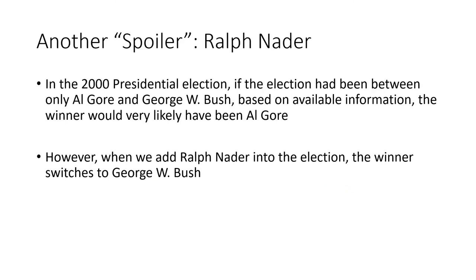A real-world illustration is the 2000 US presidential election. Al Gore was the Democratic candidate and George W. Bush was the Republican candidate. Based on polling and voter preferences, in a direct Al Gore versus George W. Bush matchup, Al Gore would very likely have won. But once Ralph Nader, the Green Party candidate, entered the election, the winner switched — not to Nader, but from Al Gore to George W. Bush. Third-party candidates like Nader illustrate the spoiler effect by affecting results without winning themselves.